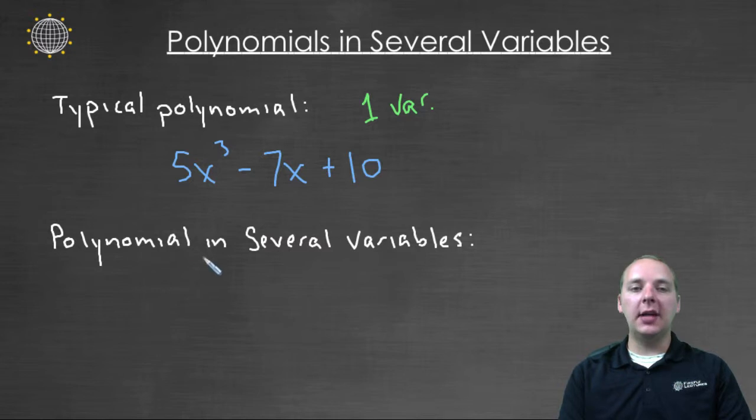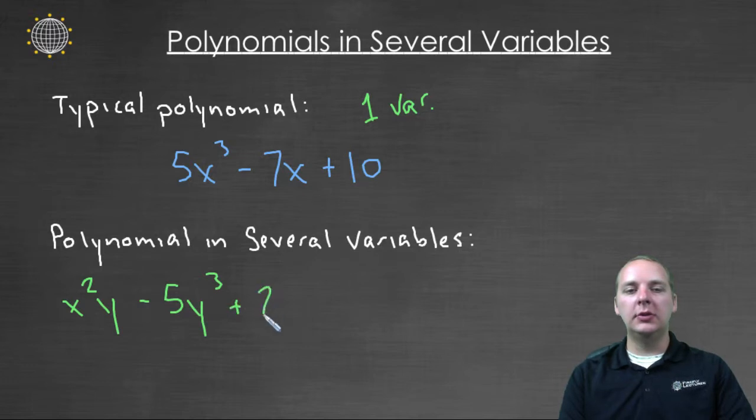You could actually have a polynomial in several variables, perhaps something like x²y - 5y³ + 2x - 1. This is still technically a polynomial. You have multiple terms that are added or subtracted together, you have constants and variables, and the variable exponents are non-negative integers. So it's totally fine to be considered as a polynomial.